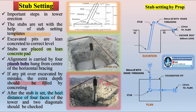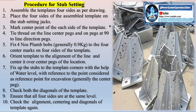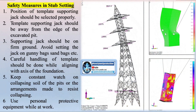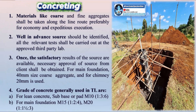Soil investigations are typically carried out at each proposed tower location to assess the soil's composition, strength, and ability to support the weight and structural loads imposed by the towers. This involves drilling boreholes at key tower locations and collecting soil samples from various depths. These samples are analyzed in laboratories to determine the soil's bearing capacity, composition, moisture content, density, and other properties. The results are used by geotechnical engineers to design appropriate foundations — for example, if the soil is weak or unstable, pile foundations may be required, while in areas with strong, stable soil, shallow foundations may be sufficient.